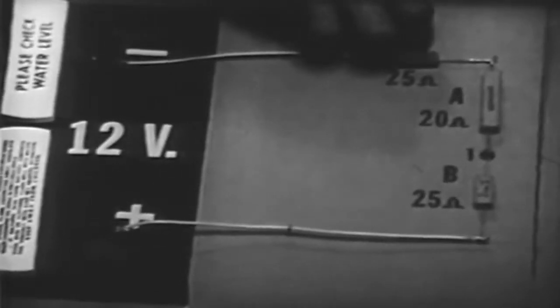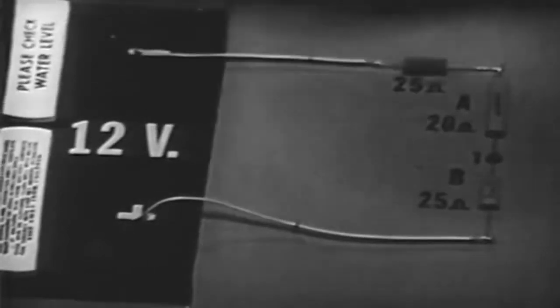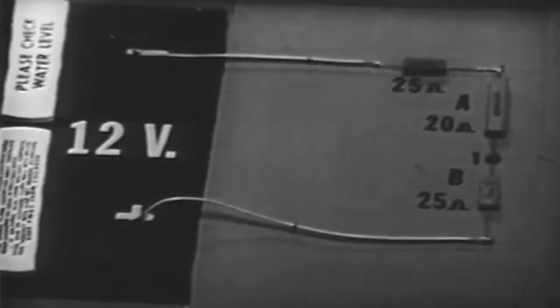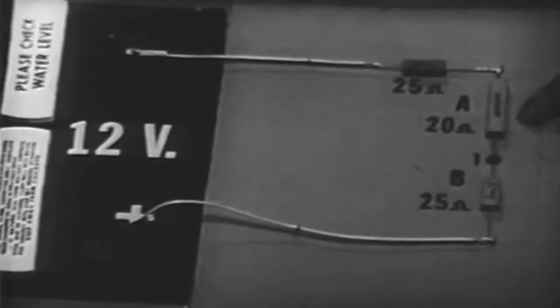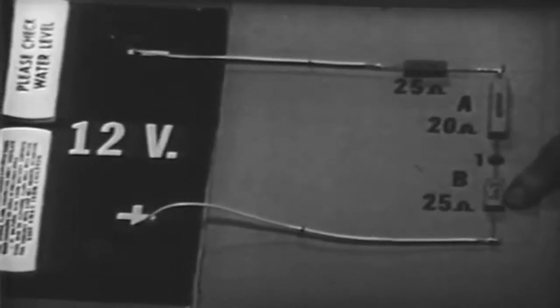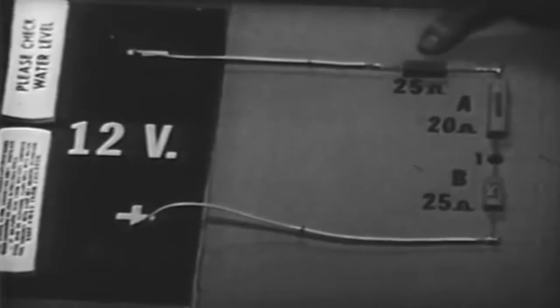For the sake of clarity, we will start with this simple series circuit and gradually build it up until it becomes a resistive bridge circuit. Here we have a 20 ohm resistor in series with a 25 ohm resistor. This dropping resistor reduces the voltage—it is not part of our bridge circuit.